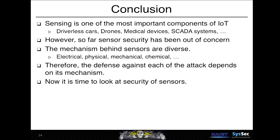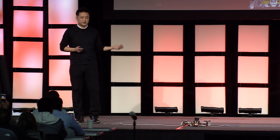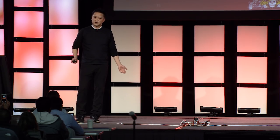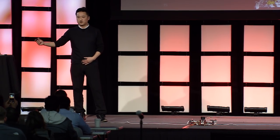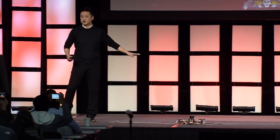Sensor security research is difficult because the mechanisms behind sensors are very diverse — electrical, physical, mechanical, and chemical sensors all exist. Therefore, the attacks and defenses for each sensor type are also diverse. I believe now is the time to look seriously at the security of sensors. Thank you very much — my student will now show a live demo of the drone experiment.